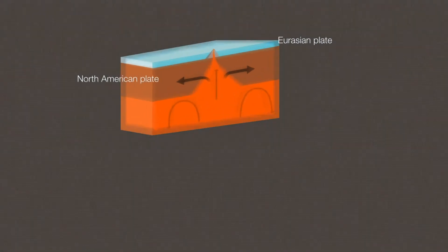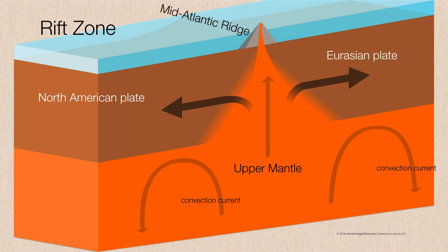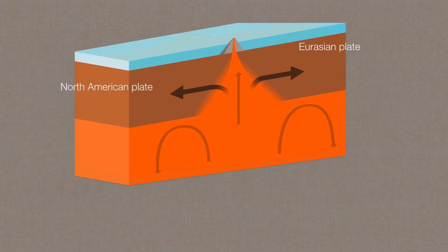So the first boundary we should talk about are rift zones. This is when you have two plates that are basically being convected away from one another, as is the case with the North American and the Eurasian plates. So as these two plates spread apart, mantle material rises up to fill it in, giving us the mid-Atlantic ridge. This is like a giant underwater mountain chain running through the Atlantic Ocean.